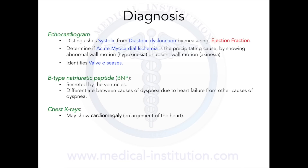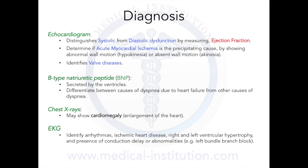Chest X-rays can show cardiomegaly, which is enlargement of the heart. EKG can also be used to identify arrhythmias, ischemic heart disease, right and left ventricular hypertrophy, and conductive delays or abnormalities such as left bundle branch block.